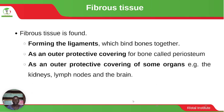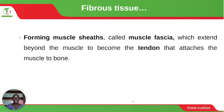Fibrous tissue is found forming the ligaments which bind bones together — the ligament is the structure that connects bone to bone. It can also be found as an outer protective covering for bone called the periosteum, and as an outer protective covering of some organs such as the kidneys, lymph nodes and the brain.